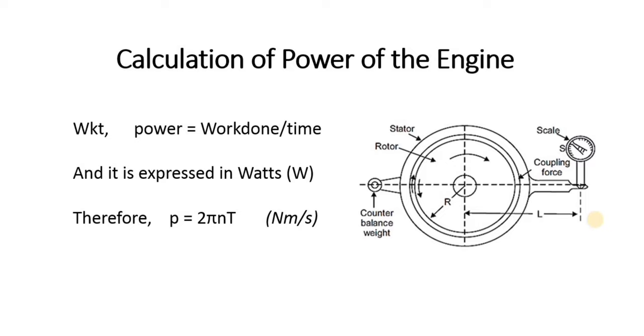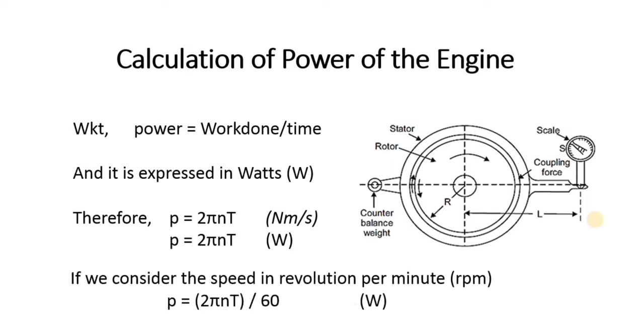Therefore, P = 2πNT can be denoted either in Newton meter per second or in watts. If we consider the speed in rpm, i.e. revolutions per minute,